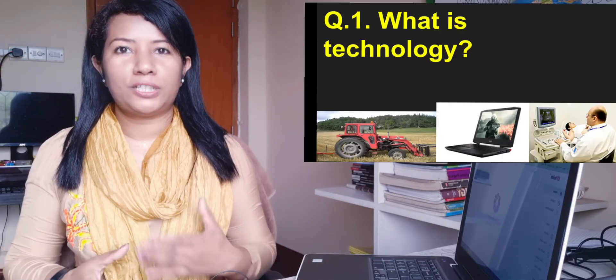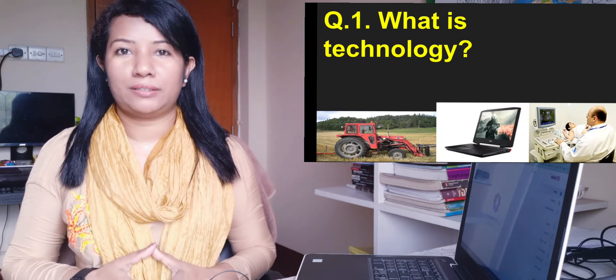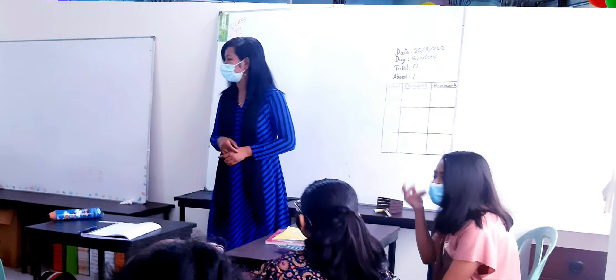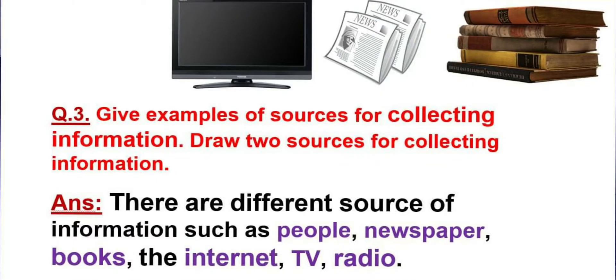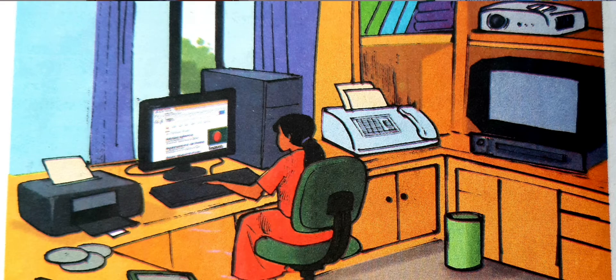What is technology and what is information? Technology is a device and information is knowledge. Information is very important for our life — by using information we can change our lifestyle, and information helps us to decide what to do. Technological tools are used to create, collect, and analyze information.